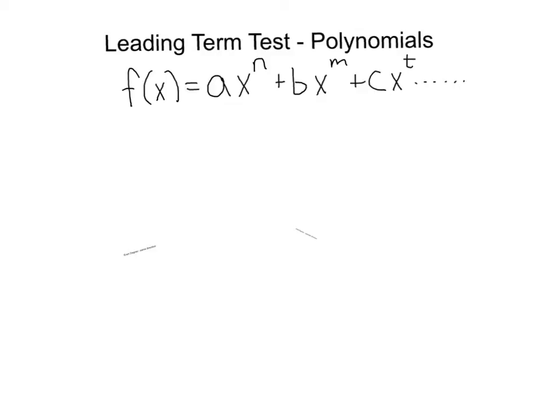So far we've been covering monomials, which means a function with one term. Here we're going to be talking about polynomials. A polynomial just has multiple terms, like this generic example here — we've got multiple terms as a part of the function.